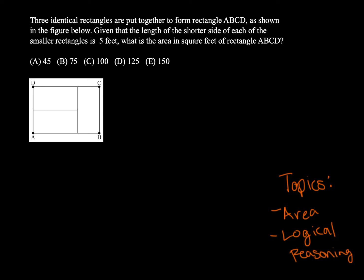All right, so let's read through our problem. Three identical rectangles are put together to form rectangle ABCD, as shown in the figure below. Given that the length of the shorter side of each of the smaller rectangles is five feet, what is the area in square feet of rectangle ABCD?